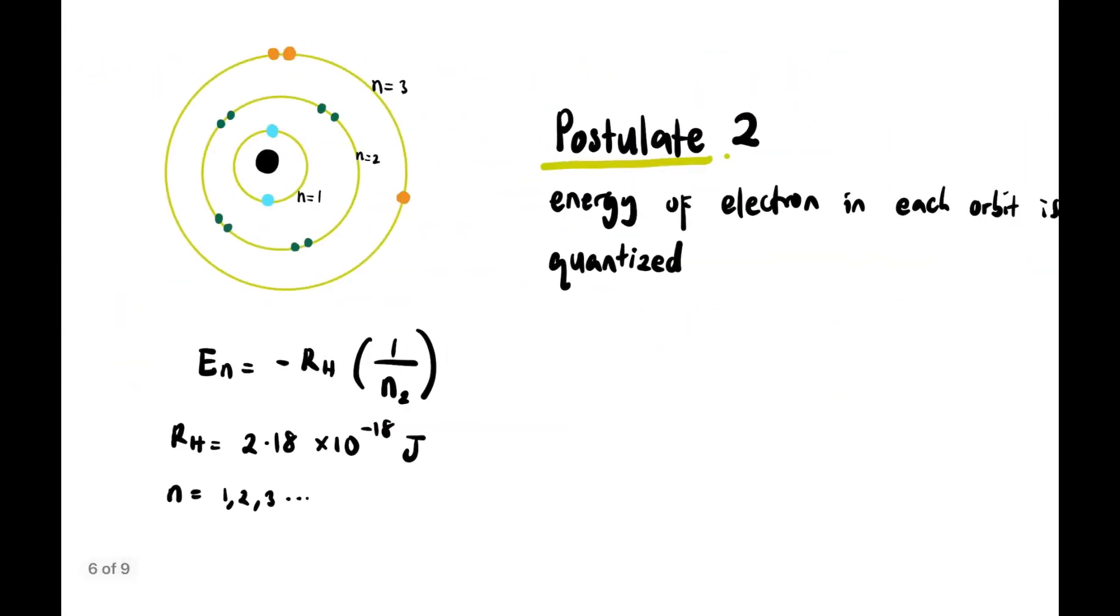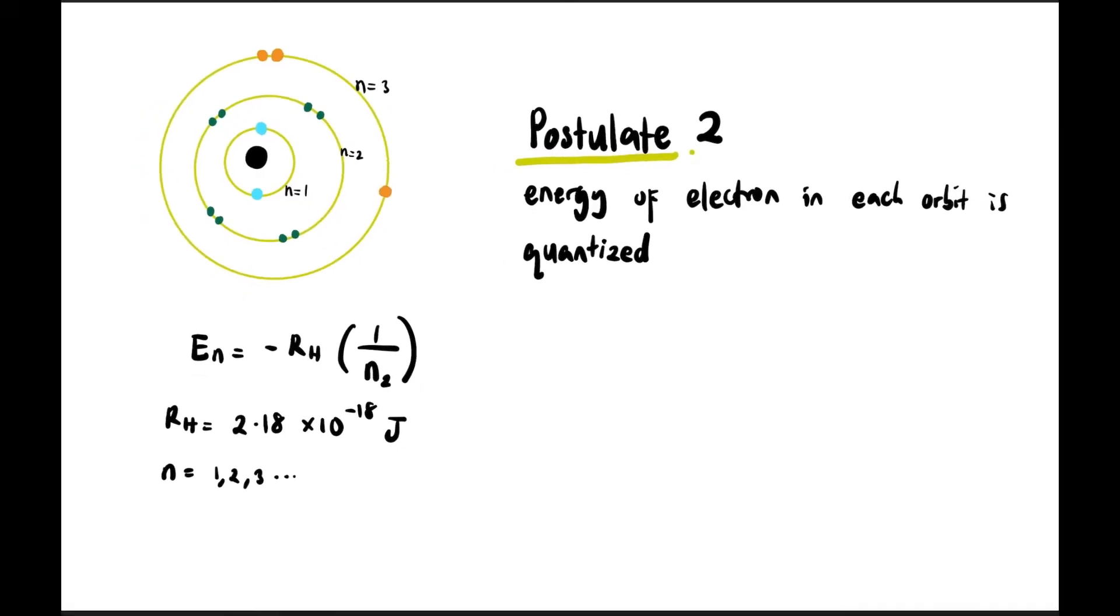Postulate 2: Energy of electrons in each orbit is quantized. This means the energy of each electron is predetermined and already calculated using a formula based on the shell number n equals 1, n equals 2, n equals 3, etc. The shell is also called the energy level. The formula is En equals negative RH in brackets one over n squared, where RH is the Rydberg constant with a value of 2.18 times 10^-18 joules.